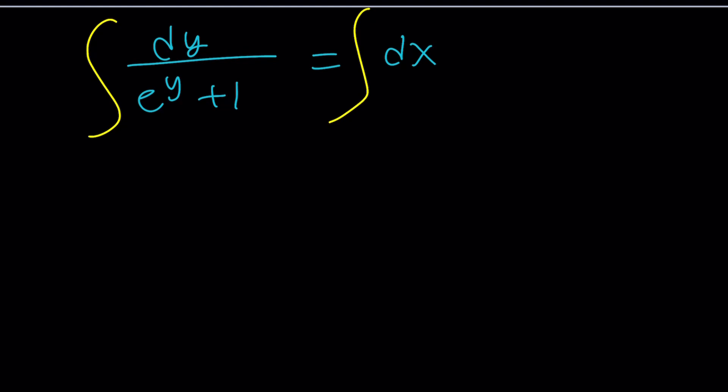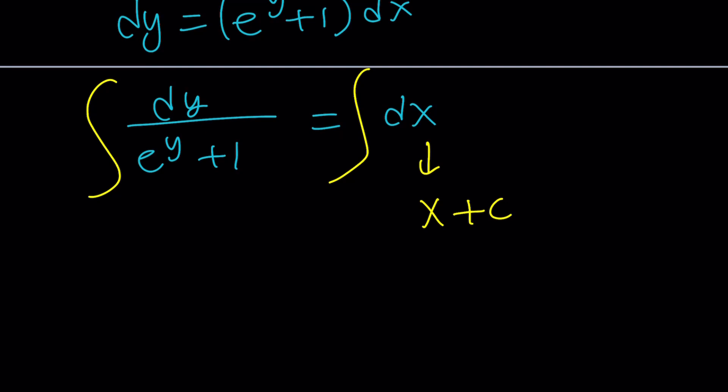And when we integrate 1 over e to the y plus 1, this is the fun part. Because you can integrate this in more than one way. Integrating dx, obviously, would be pretty straightforward, right? When you integrate, you're going to get x plus c. I want to keep the constant on the right-hand side. It's a general practice most of the time. You don't have to put constants on both sides. I'm not against constants, but only one constant will be enough. So how do you integrate this function here? That is the most important question. Let's go ahead and take a look at that. And at the end, we're going to set it equal to x plus c.